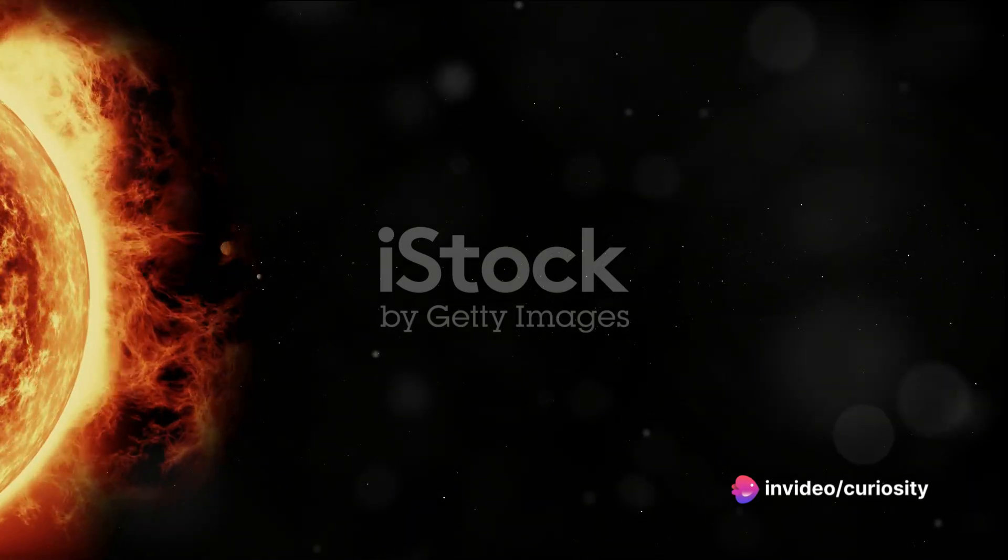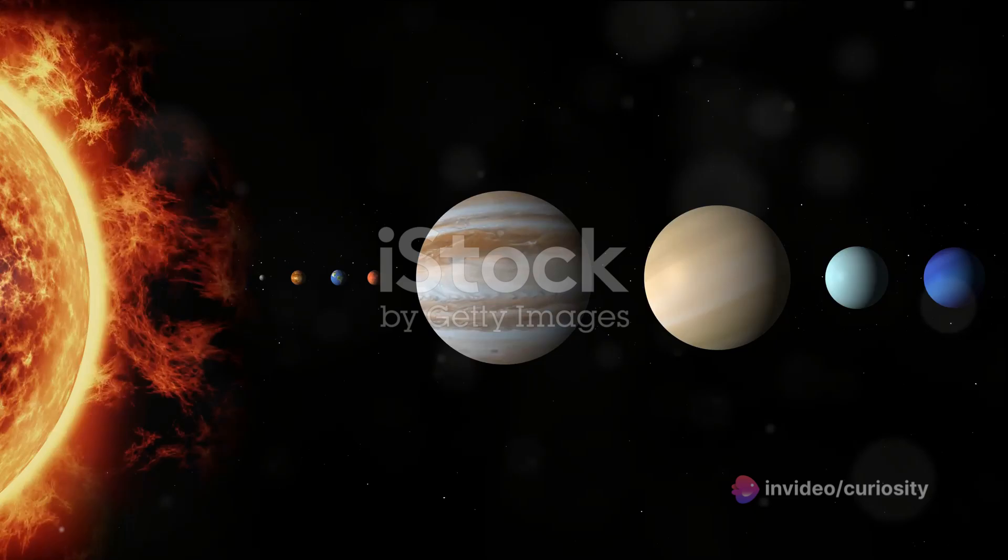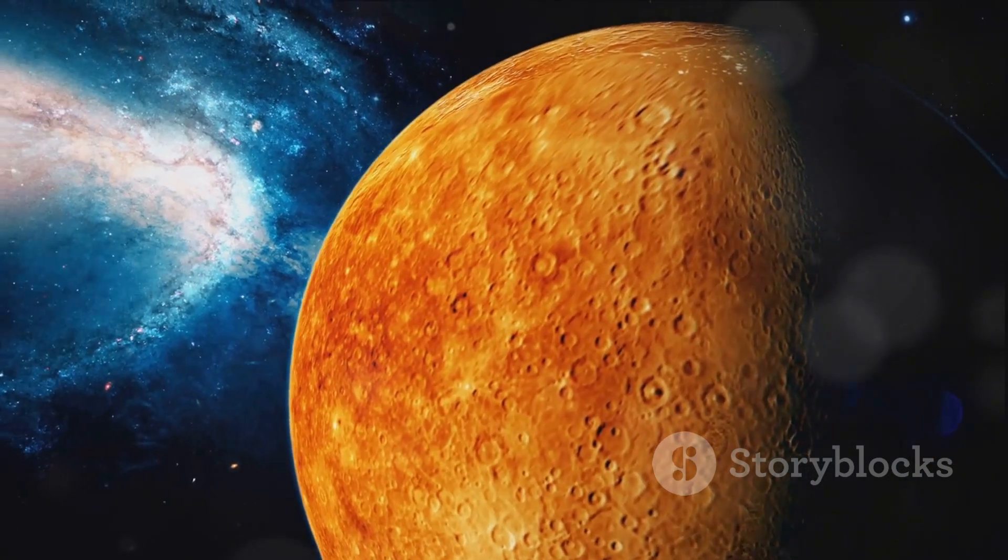On the other hand, Mercury, the smallest and innermost planet, whizzes around the Sun faster than any other, completing its orbit in a swift 88 Earth days.